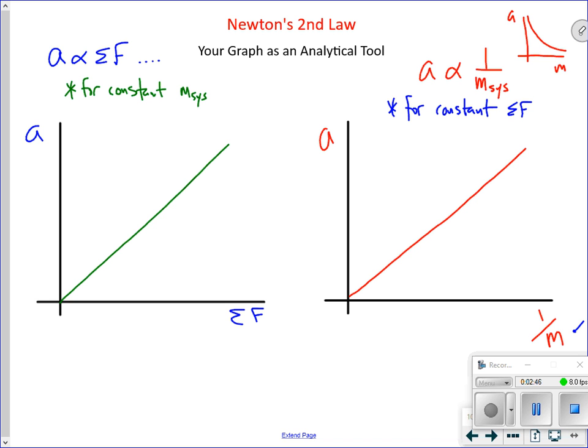All right, and we put those together into one expression for Newton's second law, which says a is net force over mass. And the way that we usually see that, the way that you will use it the most, is to say net F equals ma, net force equals mass times acceleration.